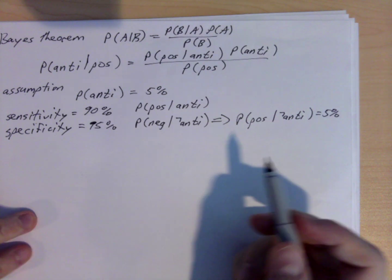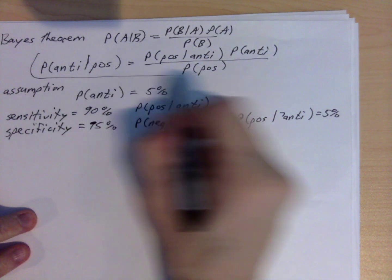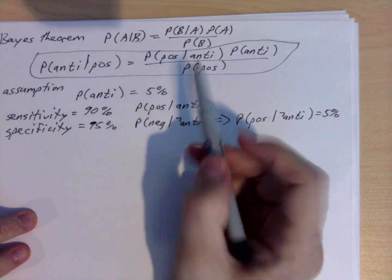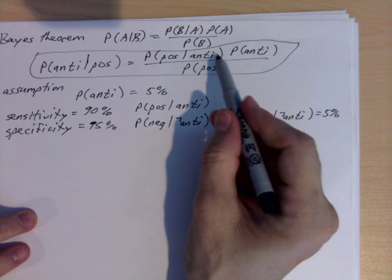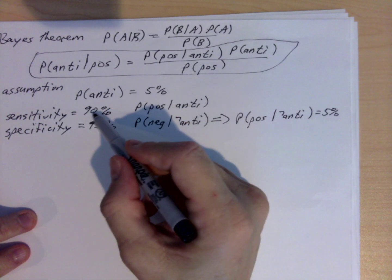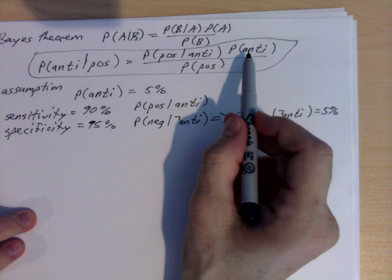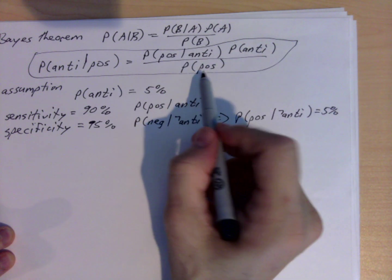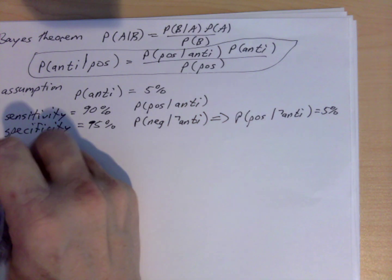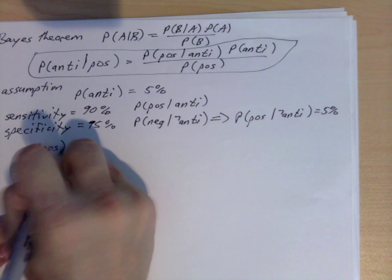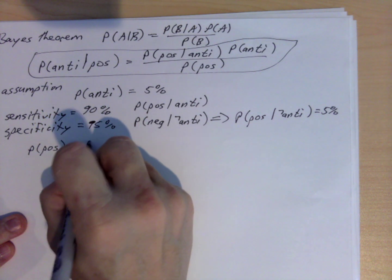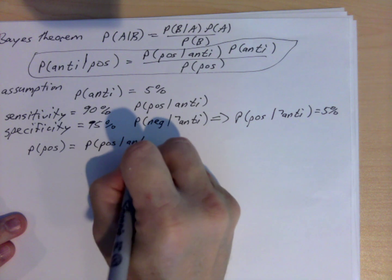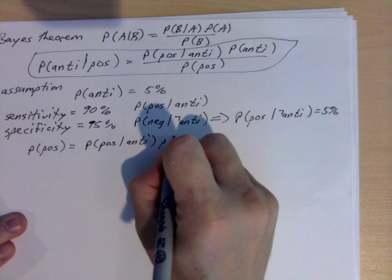And so in order to calculate this, we have the probability that you test positive given that you have antibodies. That's 90%. If you have antibodies, that's 5%. What we need is the bottom number, so the probability that you test positive is equal to the probability that you test positive given that you have antibodies times the probability that you have antibodies.